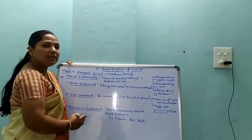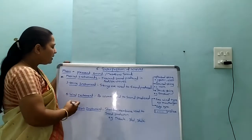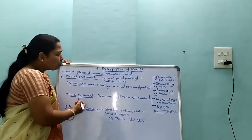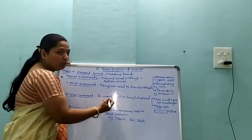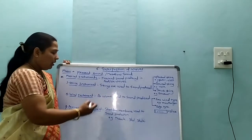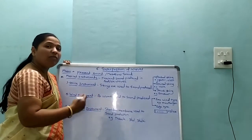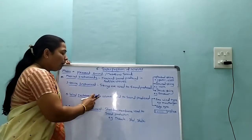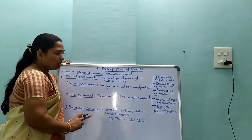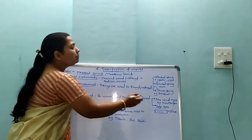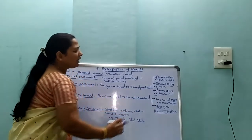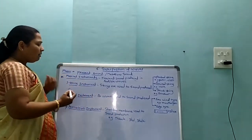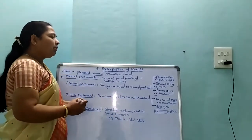The second main type of instruments are wind instruments. Wind instruments use vibrating air columns to produce sound. Examples of wind instruments include flute, harmonica, and mouth organ. The first subtype is the free wind type, for example, mouth organ.